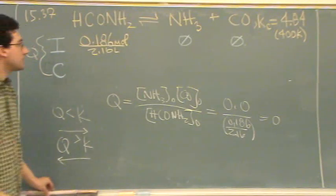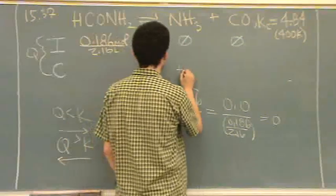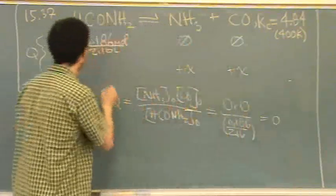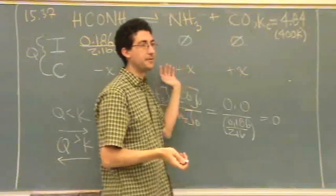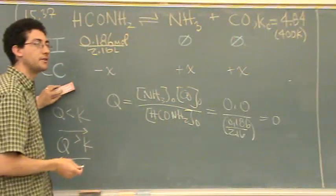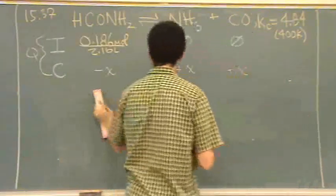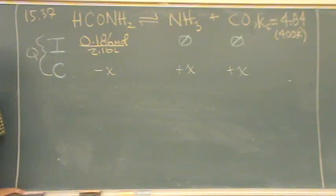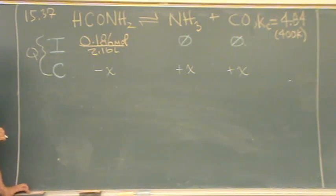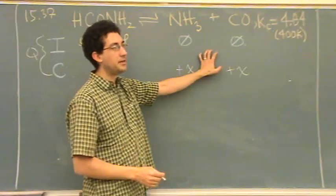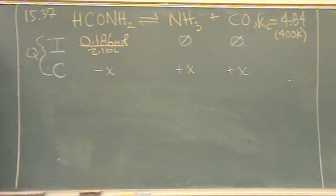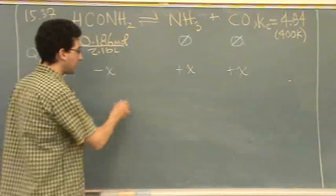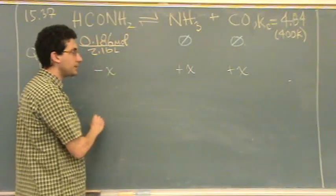A really easy shortcut: whenever you have a zero in the initial line, that's the side that has to have the plus x. You just cannot function with zeros in your equilibrium expression. So even if only one species had a zero, that's the side that gets the plus. If there are no zeros, then you'd have to calculate Q explicitly and see whether Q or K is bigger to determine which way to shift.